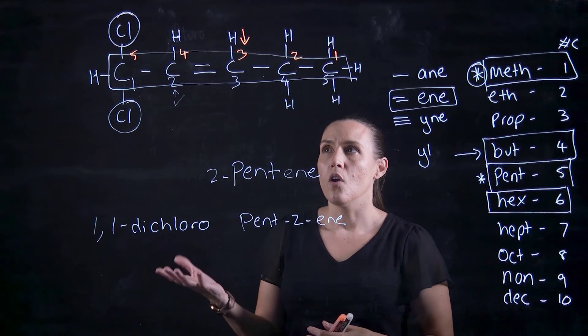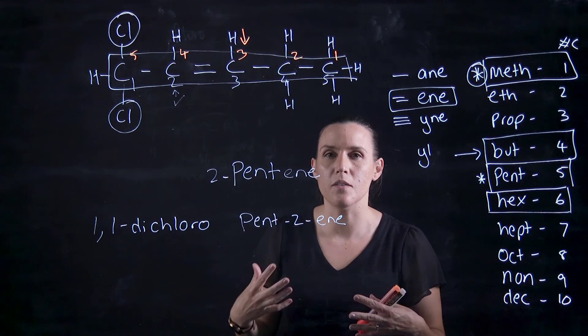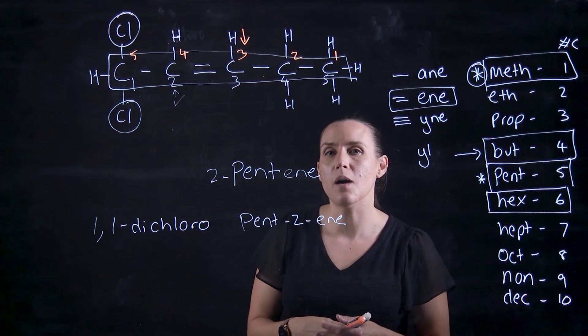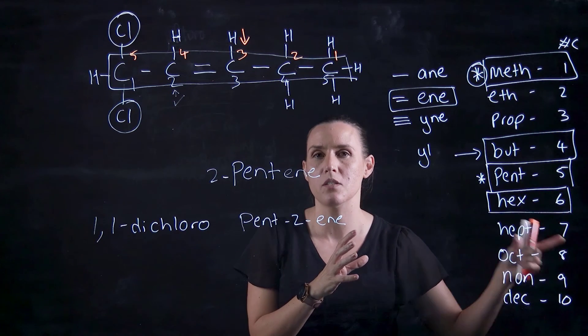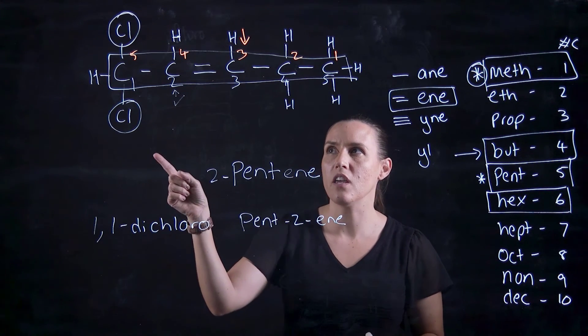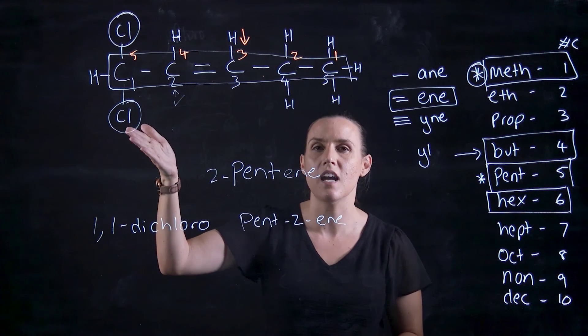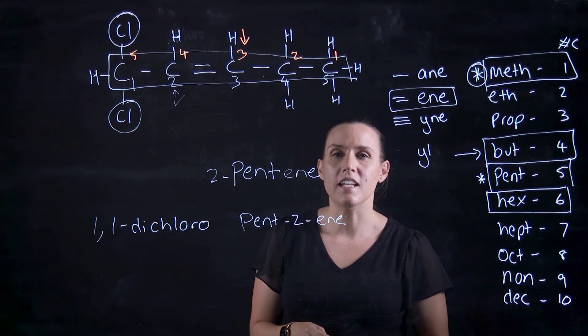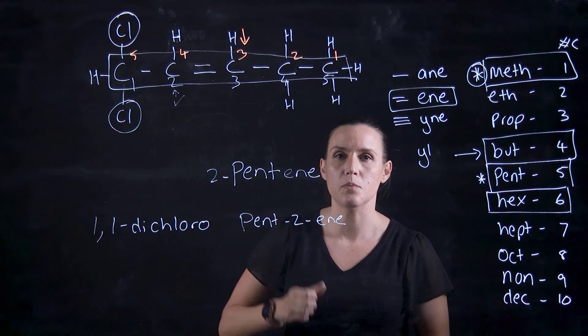So when it gets more difficult, you might have multiple groups and you need to do the sum. So thinking about if I individually add all of the numbers of the carbons that each of those substituents are on, I need to get the smallest possible number. So that's when you're working out the ordering of which carbon chain side you're starting with your number one on. So just remember that the sum of those substituents needs to be the smallest possible number.